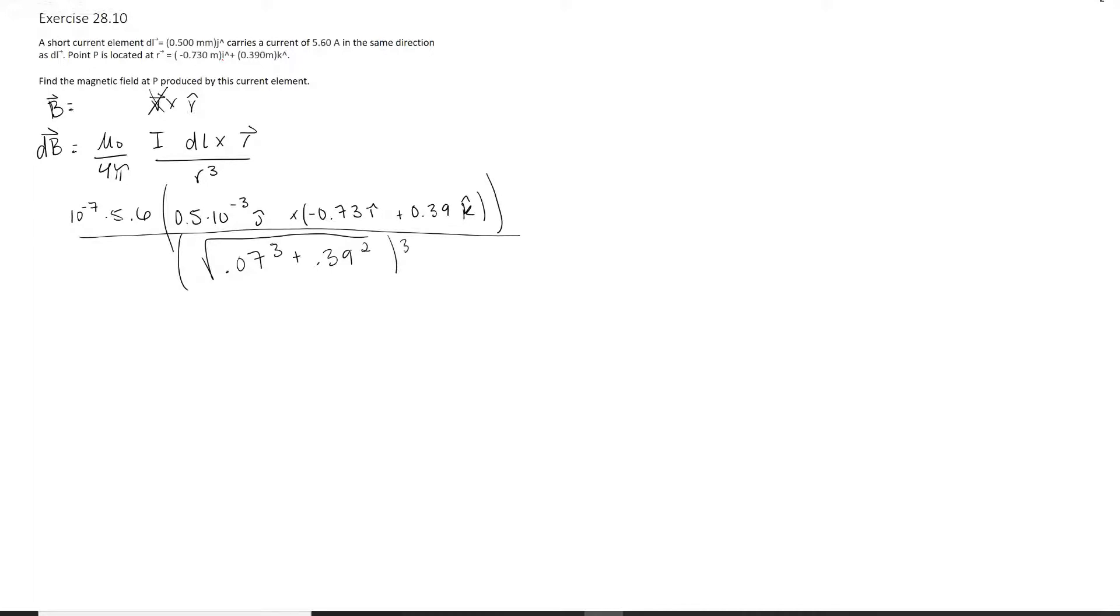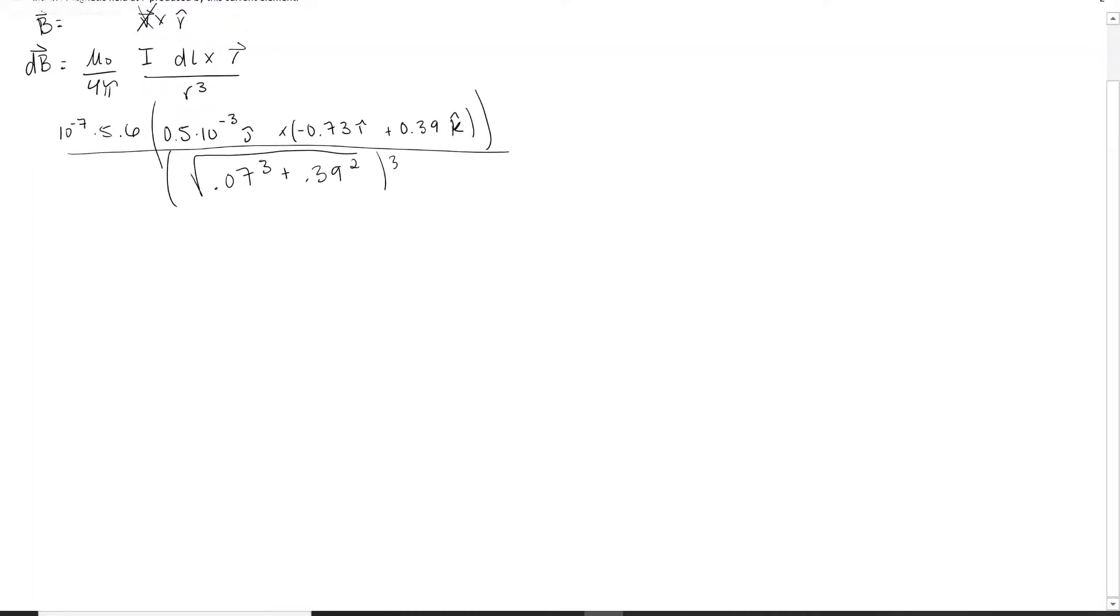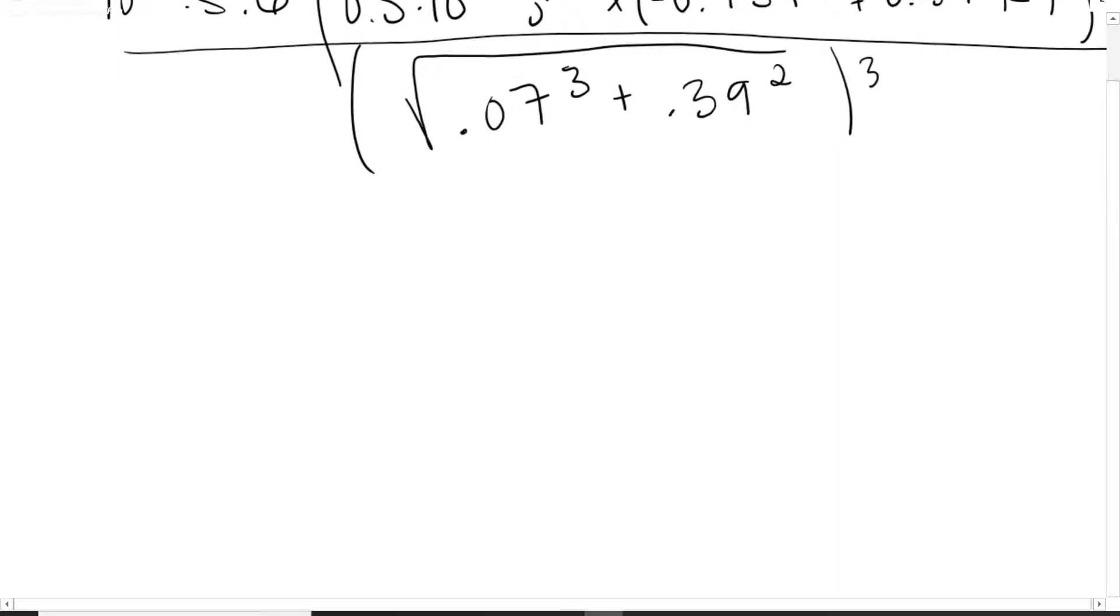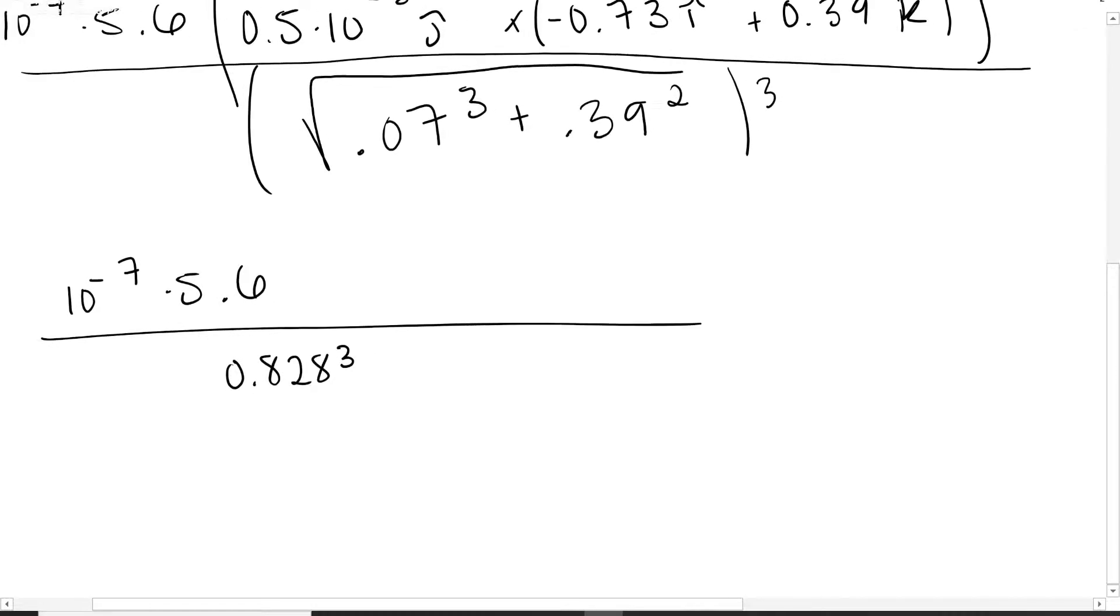The most difficult part is figuring out what to do with that cross product. 10 to the negative 7 times 5.6, and then if you simplify out this to 0.828 cubed, you're going to do the cross product and keep the parentheses to make sure we're doing it right.